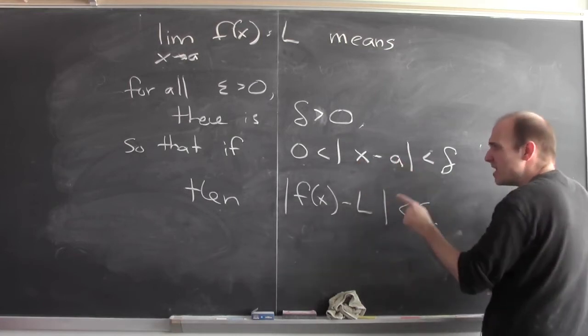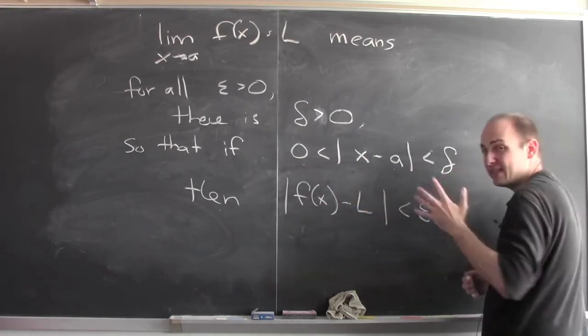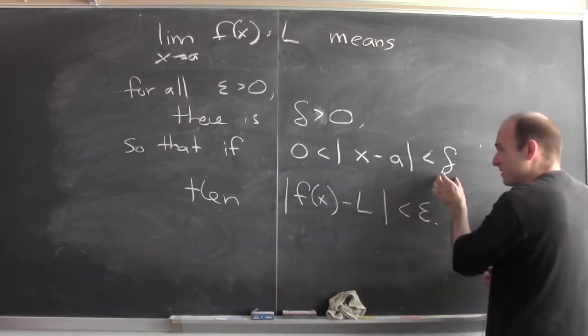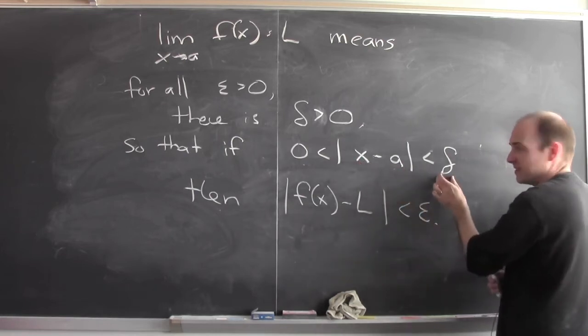So to say that the distance between x and a is between 0 and delta is to say that x is within delta of a. The distance from x to a is less than delta.